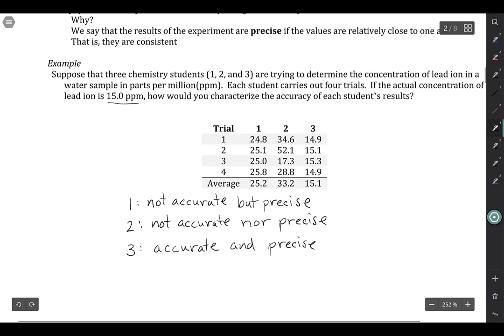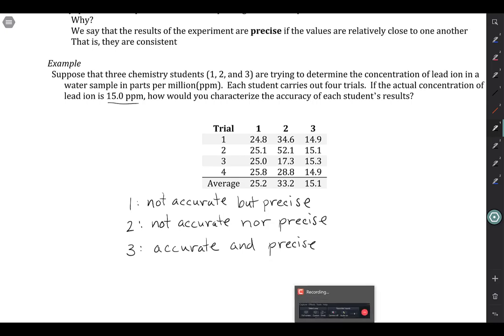Is it possible someone could get values which are accurate but not precise? Well, that might appear to be the case in some circumstances where, for example, these values might widely differ. For example, there might be a 7.5 here and a 30 here and a 15.3 here and a 15.1 here. And you'd get pretty much about the same average. But the only way really for that to happen is for someone to just get lucky. So that's just random luck if someone gets the right answer without being precise. So we don't expect that kind of a result to occur with any kind of frequency.